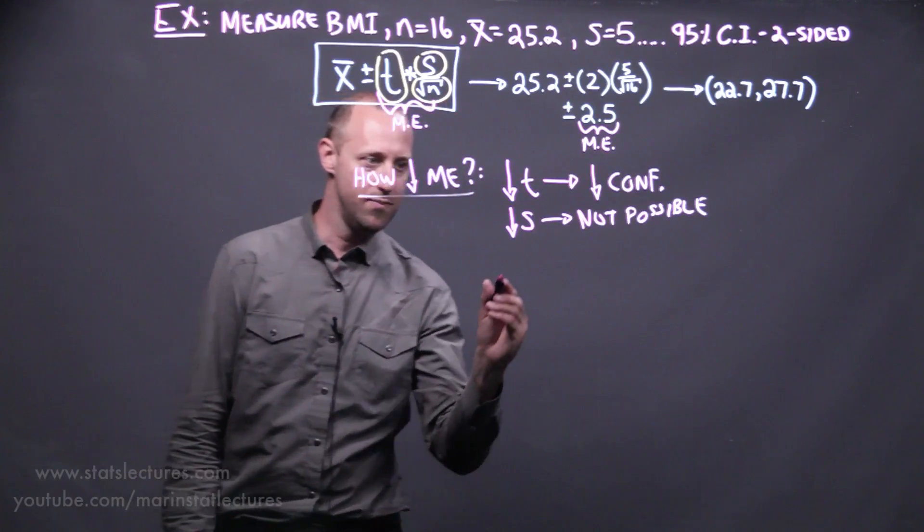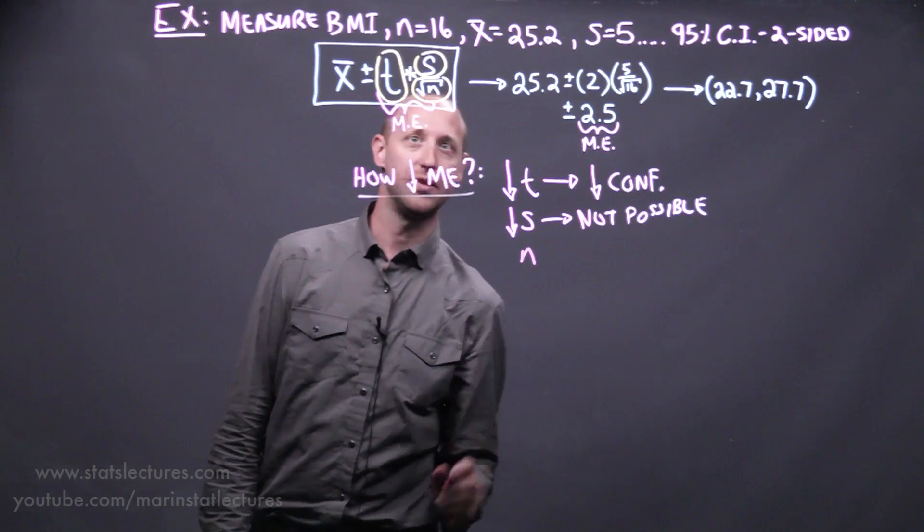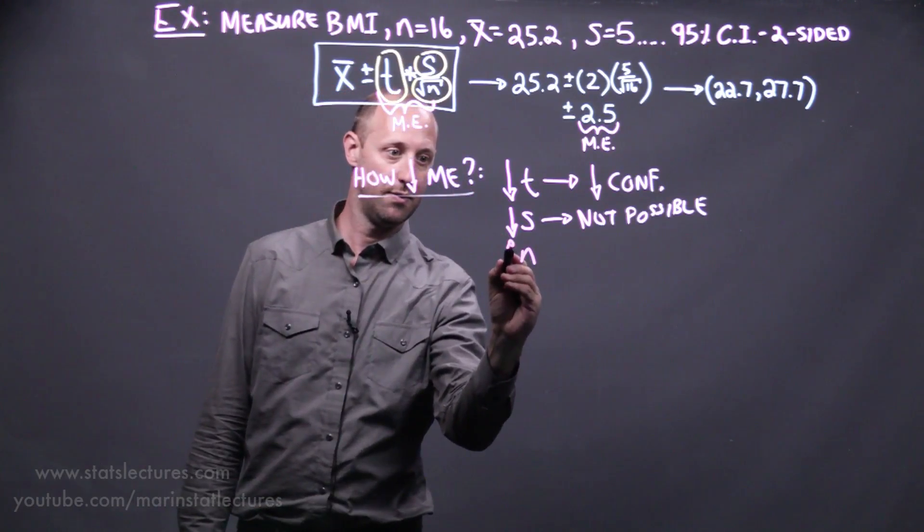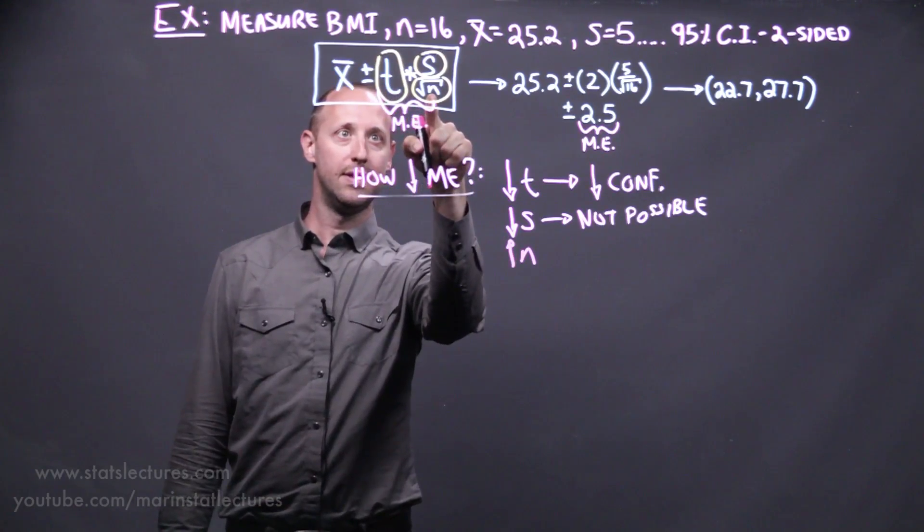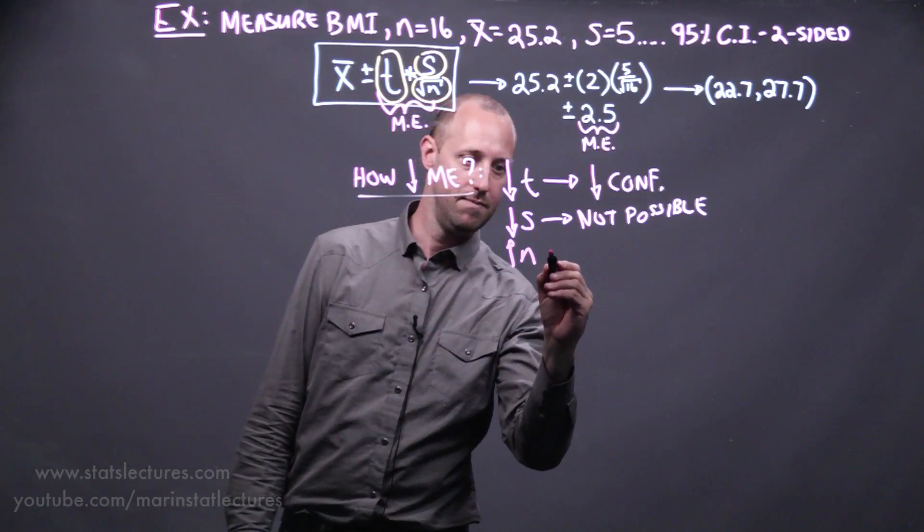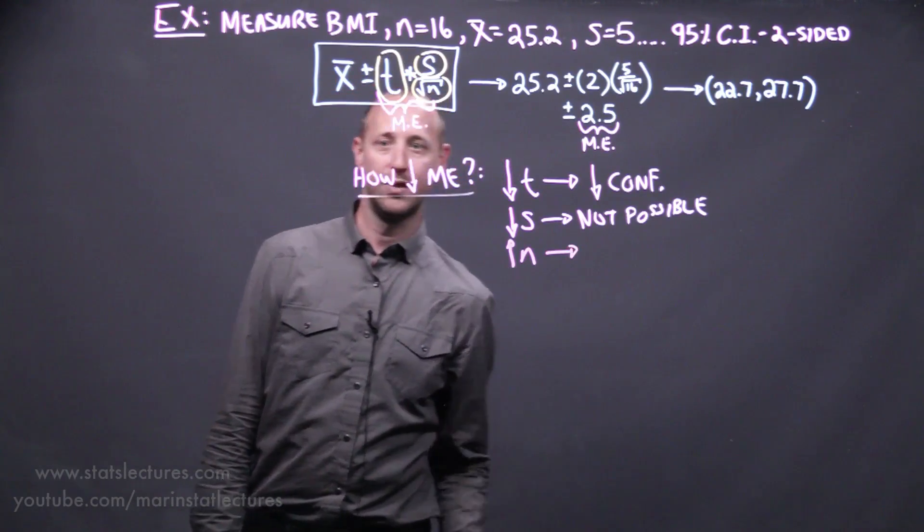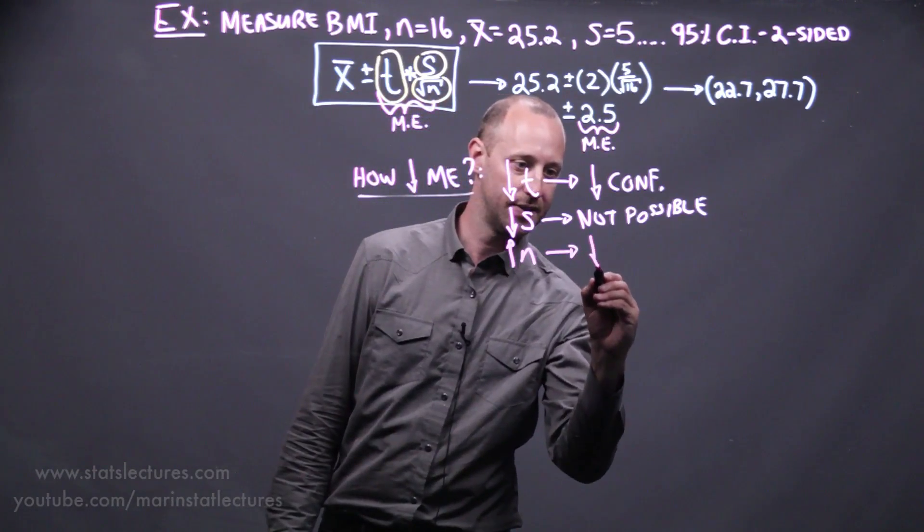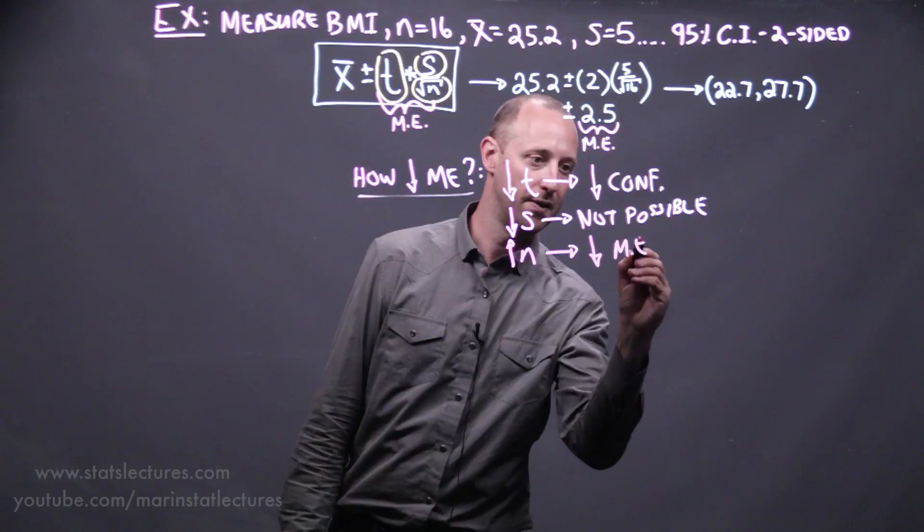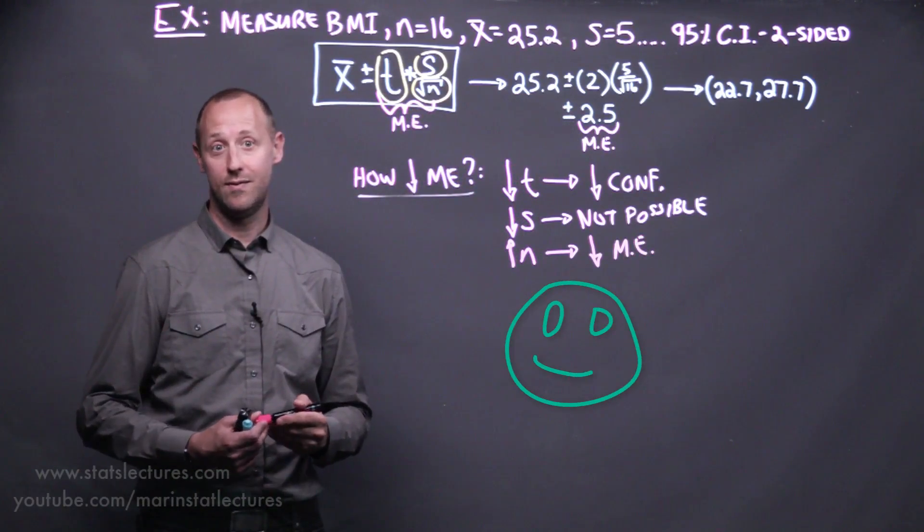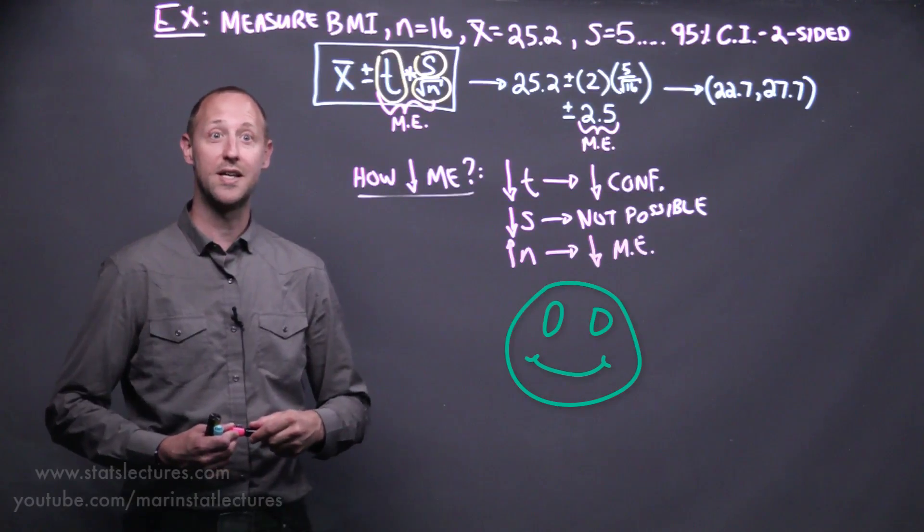The final thing we can think about is the sample size. We can see here if we make the sample size larger, that's going to make this whole thing here smaller or the margin of error smaller. So we can increase our sample size and that's going to help us decrease the margin of error. And there's not much cost to doing this other than the time and money it takes to collect samples.